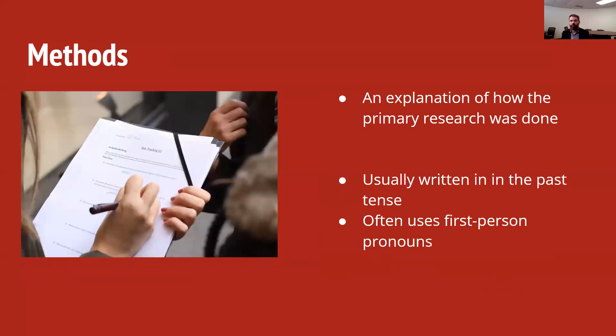Now let's talk about the method section. The purpose of the method section is to explain how you did your primary research. You want to explain that process. It's a narrative, a story where you explain all the parts of it. This is usually written in the past tense because you're describing something that you did. And even though we often avoid first-person pronouns when describing the research of others, when we write about our own research, it's very important and relevant to use first-person pronouns.